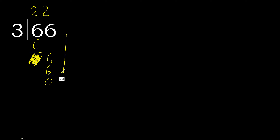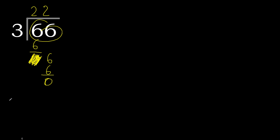There is no number left and the remainder is 0, therefore finish. 0 is the remainder. 66 divided by 3 equals 22.